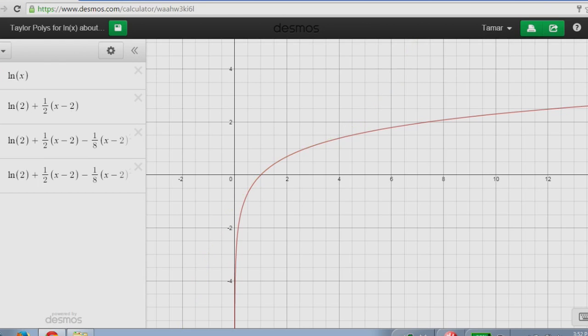So let's look at these all at once. The first degree or the linear approximation, second degree Taylor polynomial, third degree.